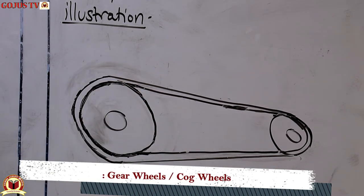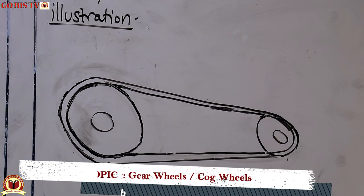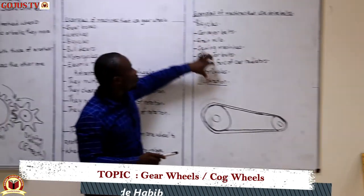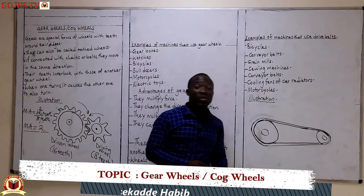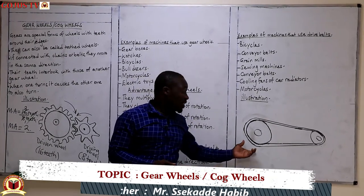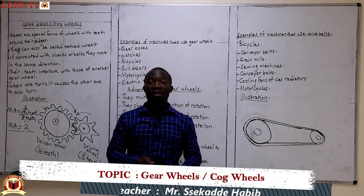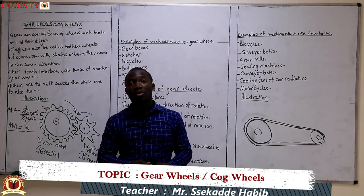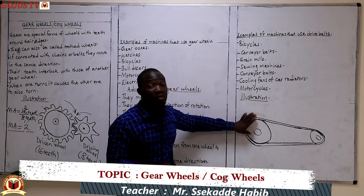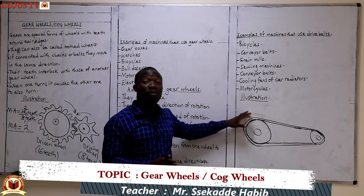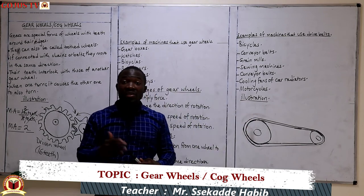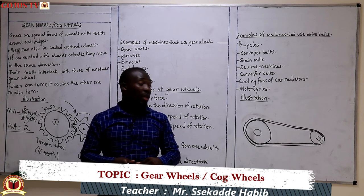Now we can look at each of these wheels and come up with the uses of the drive belts. This is a discussion you are going to have with colleagues at home — discuss the uses of a drive belt using the examples highlighted here, and then list them in your workbook.